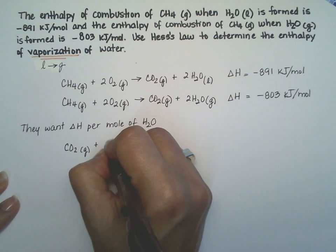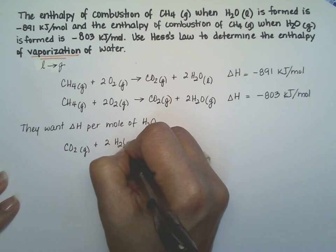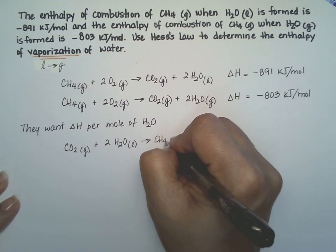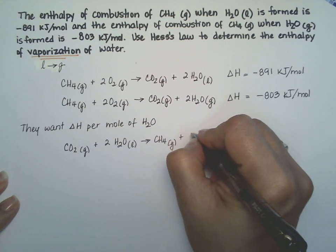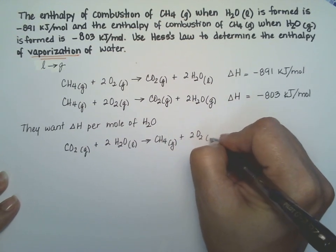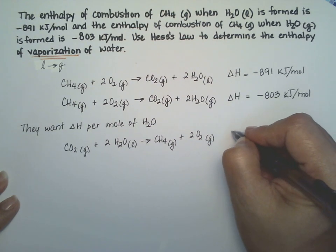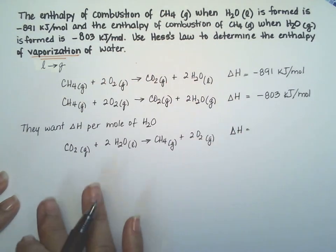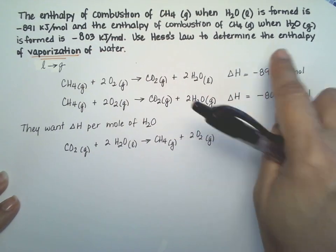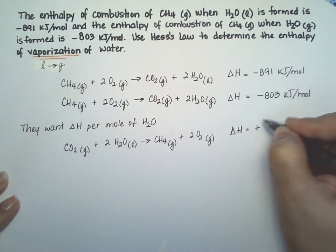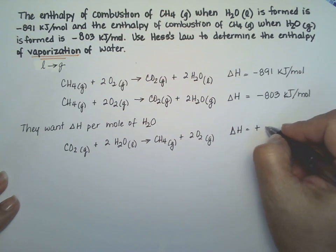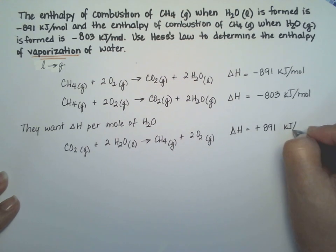So CO2 and two moles of water liquid, forming methane gas and two oxygens in the gas state. The delta H for this reaction, we flip the reaction over, so we need to flip the sign. So this reaction that they gave us is negative, but if you do the opposite reaction, that one's going to be a positive number. So it's 891 kilojoules per mole.